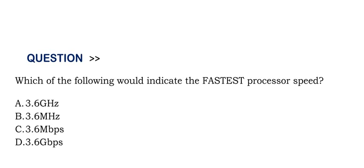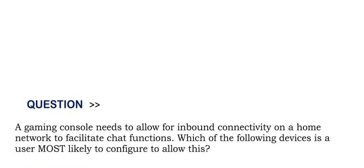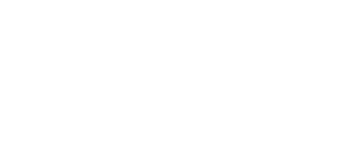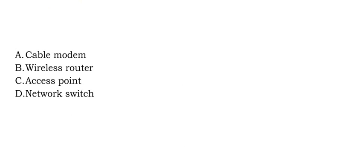The correct answer is Option A. Next question: A gaming console needs to allow for inbound connectivity on a home network to facilitate chat functions. Which of the following devices is a user most likely to configure to allow this? Option A: Cable modem. Option B: Wireless router. Option C: Access point. Option D: Network switch.